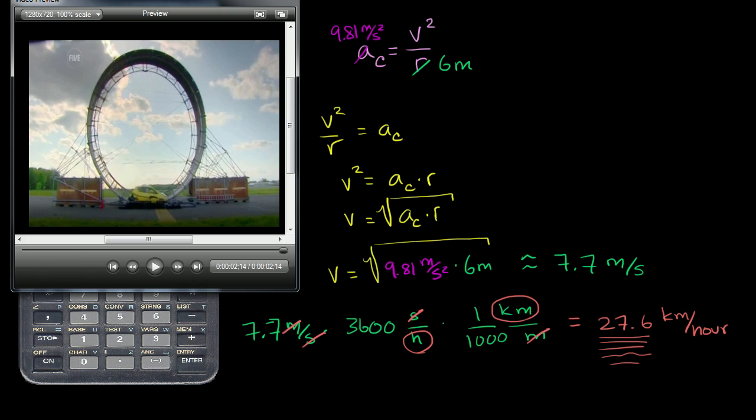In the last video, we figured out the absolute minimum speed in order to stay on the circular path right over here, especially near the top, was 27.6 kilometers per hour.